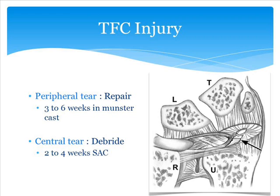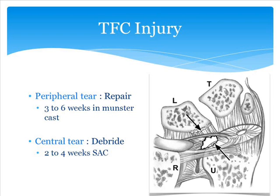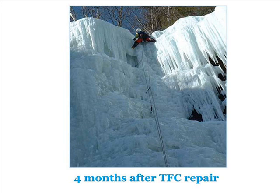After a peripheral TFCC repair, we immobilize in a cast that limits forearm rotation for about four weeks, then move to a removable splint and begin therapy. For central tears, there's not much to do other than to clean those up or debride them — they typically need less immobilization, maybe two to four weeks in a short arm cast. The arrows here show tears at a more central location, the ones we would debride. Here's an ice climber who was able to get back to climbing Franconia Notch at about four months after repair — we would typically see athletes getting back to sports-specific activities at about three to six months.